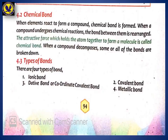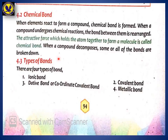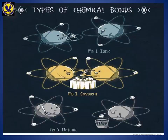The bond is rearranged. The attractive force which holds the atoms together to form a molecule is called a chemical bond. This is the definition of chemical bond. There are 4 types of bonds.